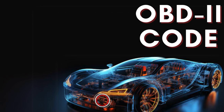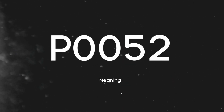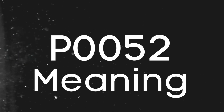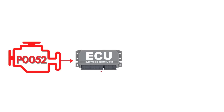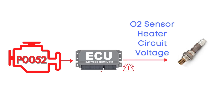Hey there! In this video, we're diving into everything you need to know about OBD-II trouble code P0052. This code gets triggered when the engine control module detects that the voltage in the heater circuit of the oxygen sensor is higher than expected.